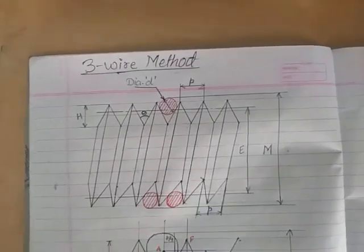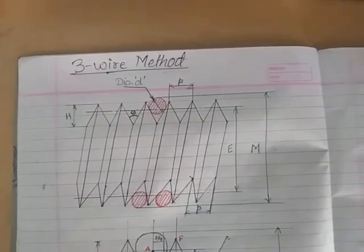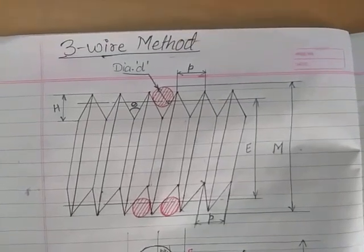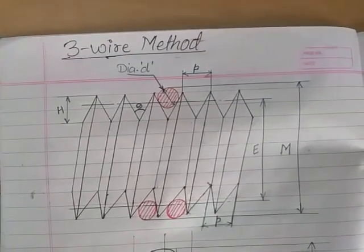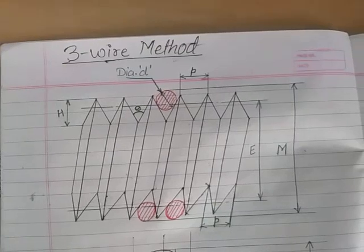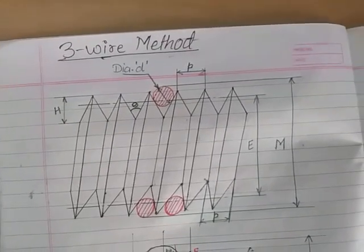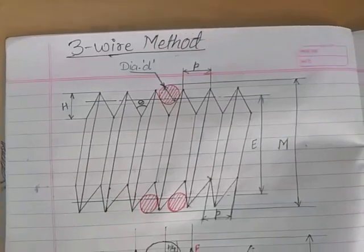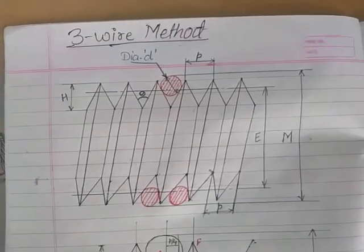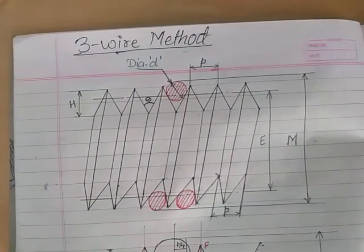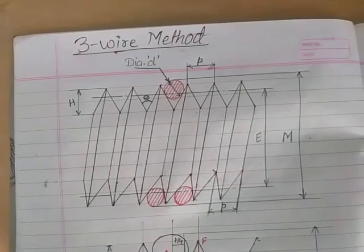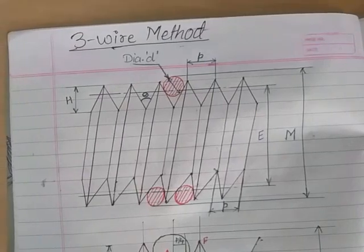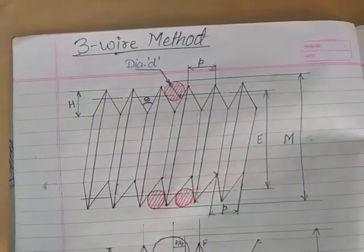Hello everyone, today we are going to learn the three-wire method of effective diameter measurement. This is the most accurate method among all three methods: the one-wire method, two-wire method, and three-wire method. We have already seen the best wire size derivation and derived the equation for the two-wire method. Now we are going to see the effective diameter measurement by the three-wire method.